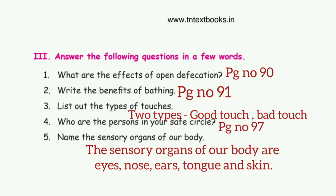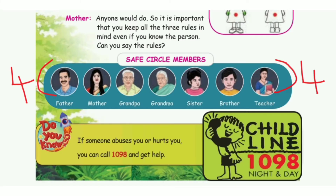Third question: list out the types of touches. The answer is two types — good touch and bad touch. Fourth question: who are the persons in your safe circle?